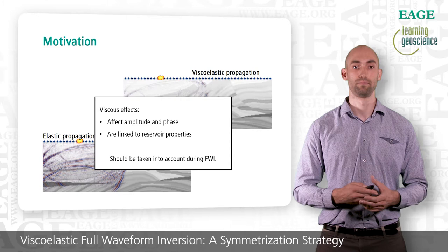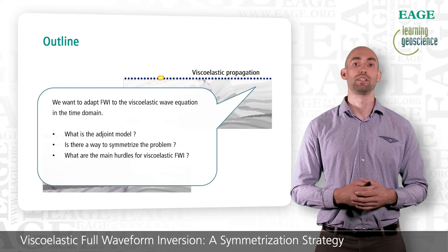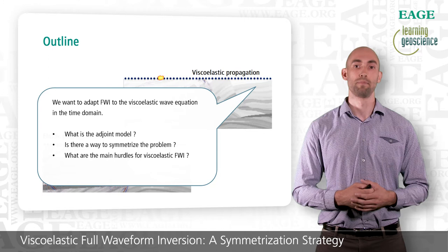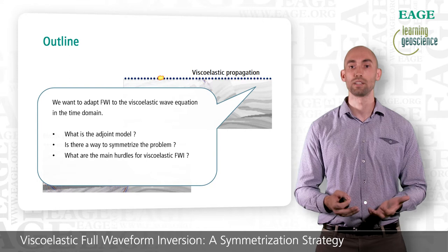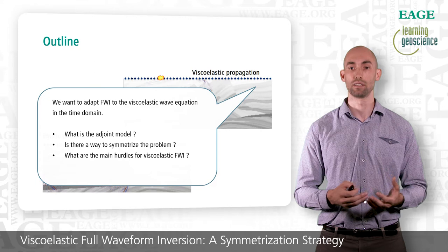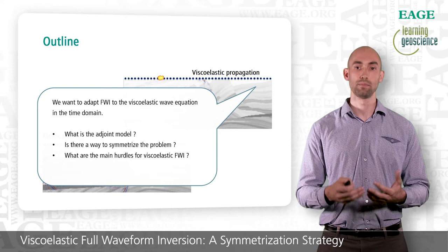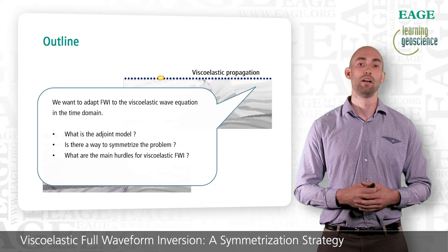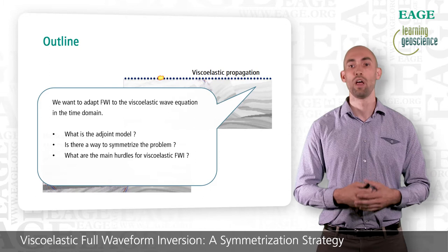I will discuss three points in this presentation. First, what is the adjoint equation for viscoelastic FWI? The adjoint method is at the heart of FWI and is what makes it possible to efficiently calculate the correction needed to improve our subsurface models. We will see that the adjoint state method requires solving two different PDEs — one for the forward wave field and one for the adjoint wave field. I will present a symmetrization strategy that allows reusing the same PDE for both. Finally, I will discuss some hurdles to viscoelastic full waveform inversion through a synthetic example.